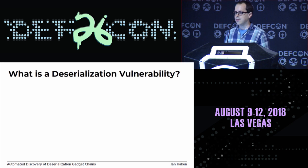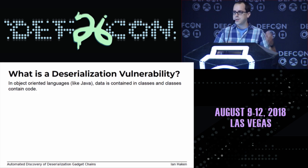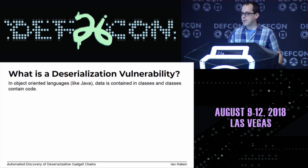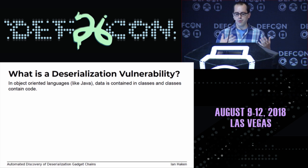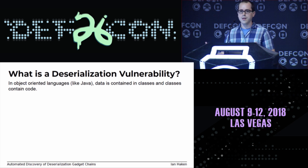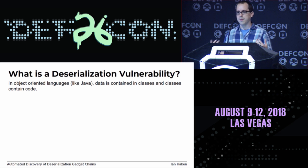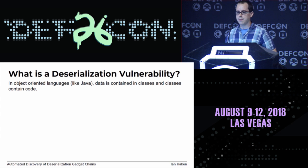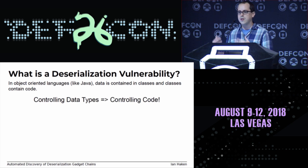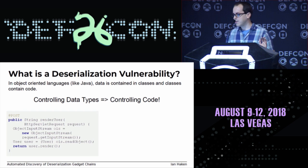So what is a deserialization vulnerability? In object-oriented languages like Java — and I'm mostly going to be using Java examples — code is contained in classes, and classes hold your data alongside the code. That's the whole point of object-oriented design, and it gives you cool features like polymorphism. But this means that if you control the type of data — if you're able to specify what data type something is — then you're implicitly controlling what code gets run.